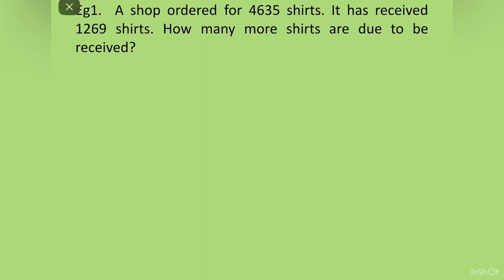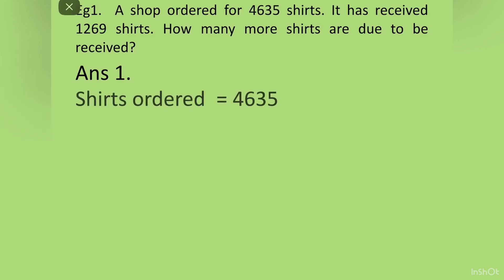To solve this question we will take information in pieces. Let us read the first line again: A shop ordered for 4,635 shirts. So we will write 'shirts ordered'. Then it received 1,269 shirts, so we write 'shirts received'.